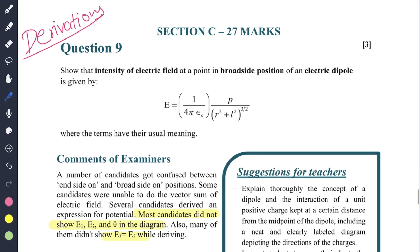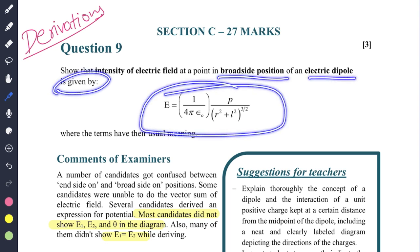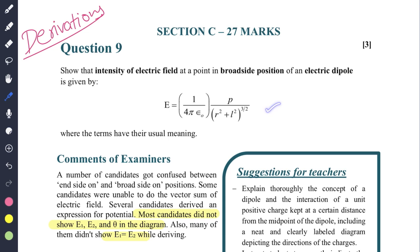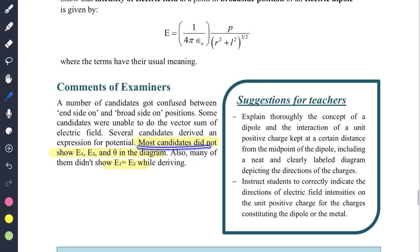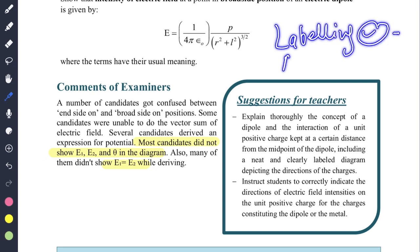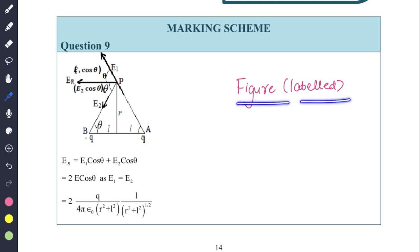Then the derivations: show that the intensity of electric field at a point in broadside position of an electric dipole is given by - so this is what you have to prove. Questions on broadside and end-on are asked every year. Candidates did not show E1, E2, theta in the diagram. Labeling should be done along with the diagram. You can draw the diagram with a pencil. The figure should be labeled: E1 cos theta, E2 cos theta, and you should make a legible diagram.